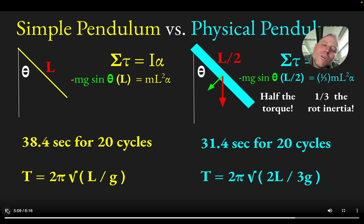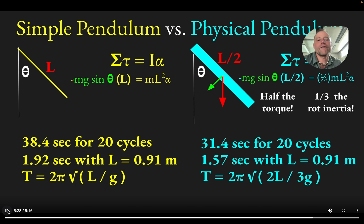If you actually bother to calculate, you can see that those times are different by a factor of root two thirds. But if you end up solving for the period or dividing the 38.4 by 20, you find that the simple pendulum took 1.92 seconds for a single cycle and the physical pendulum took 1.57 seconds for a single cycle.